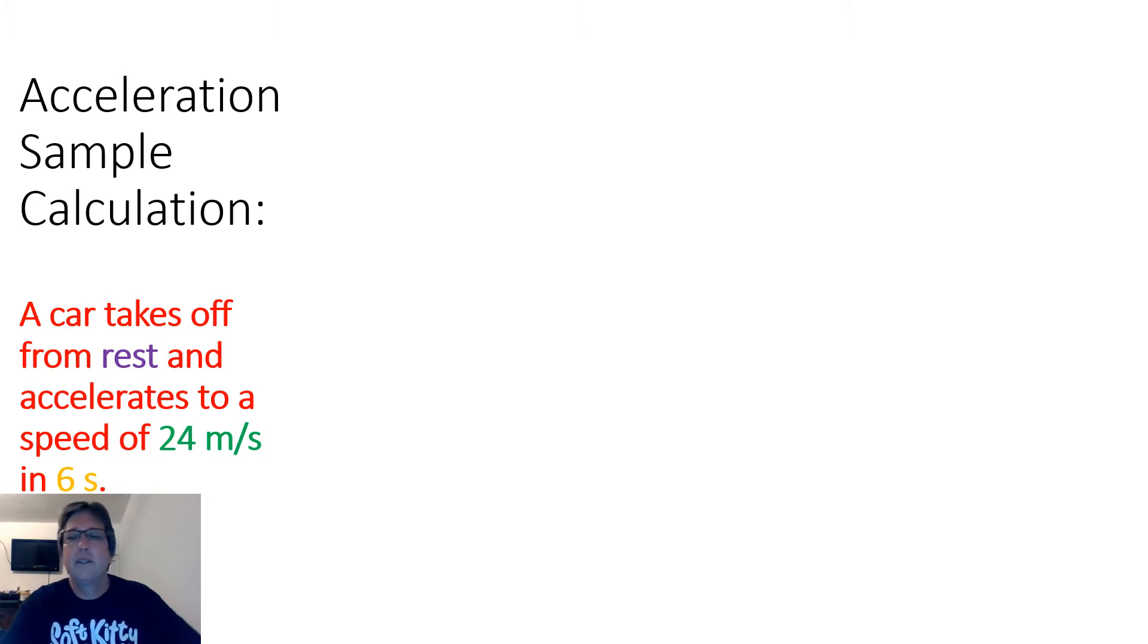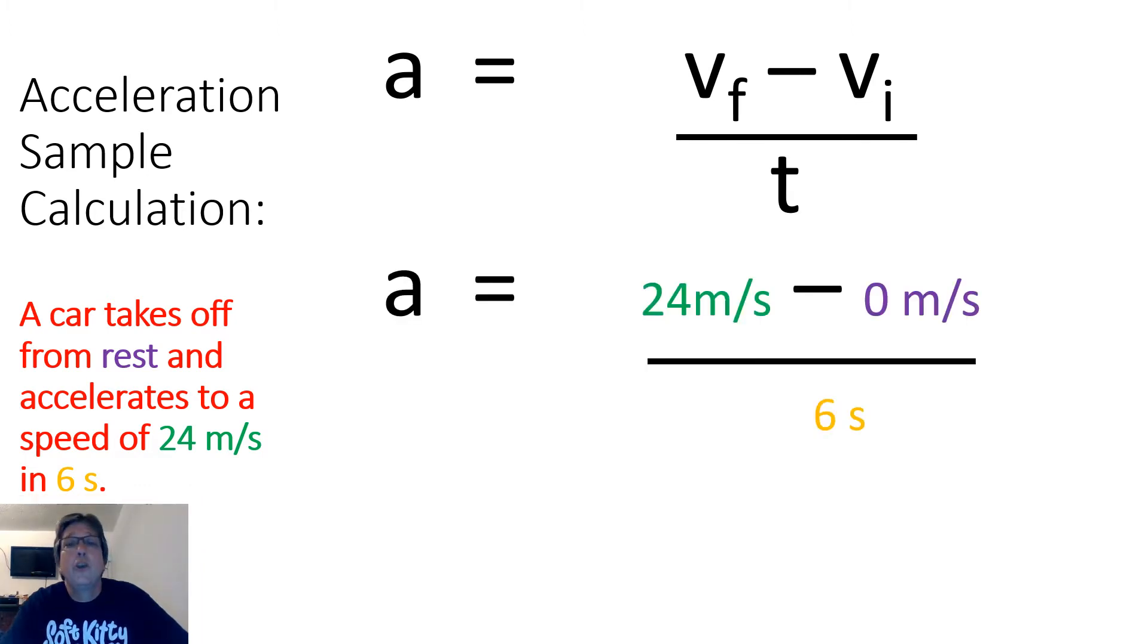Let's look at a few samples to see how this is done. In our first sample, the question asks us to find the acceleration for a car that takes off from rest and accelerates to a speed of 24 meters per second in just six seconds. Well, how do we solve a problem? What's always the very first step in every problem you solve in physical science? That's right. Write the formula. And here we have it written. A equals V sub F minus V sub I all over T. Now, after we write the formula, what's the next thing we've got to do? You got it. We fill it in with numbers and units. Okay, so let's look. A car takes off from rest. Well, takes off from means that's the initial or the first velocity. And rest means you're not going anywhere. So rest is zero meters per second.